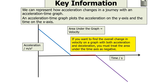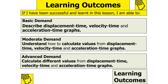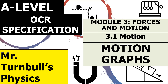That brings an end to our lesson on motion graphs. We've looked at graphical representations of displacement, speed, velocity and acceleration. We've looked at displacement time graphs where velocity is the gradient, and velocity time graphs where acceleration is the gradient and displacement is the area under the graph. We should now be able to describe displacement time, velocity time and acceleration time graphs, calculate values from them, and calculate different values from each. Thank you very much for watching this lesson on motion graphs, part of the motion subtopic in the module of forces of motion for OCR A-level physics.